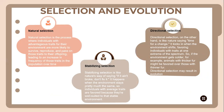Selection and evolution can be divided into three criteria: natural selection, stabilizing selection, and directional selection. Natural selection is the process where individuals with advantageous traits for the environment are more likely to survive, reproduce, and pass on those traits to their offspring, leading to an increase in the frequency of those traits in the population over time.